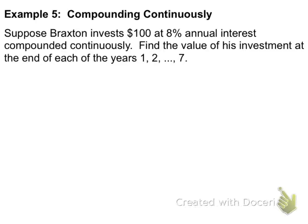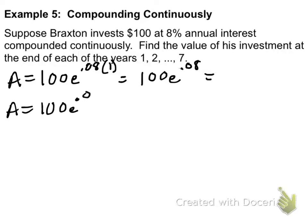So, suppose Braxton, Braxton Miller, Ohio State University. Let's use him. Apparently, Braxton only has $100, but he's going to invest it at 8% annual interest compounded continuously. Find the value of his investment at the end of each of the years, 1, 2, and all the way to 7. So, there's going to be 7 answers here, guys. So, A equals the principal, 100, E, to the .08 times 1, 1 year. So, you have to figure out what 100, E, to the .08 power is. I'll leave that to you. And then you're going to do A equals 100, E, to the .08 times 2. So, that'll be 100, E, to the .16 power, and so on. Now, when I check your notes, I'm going to expect to see all 7 of those answers, kids. So, make sure you figure these out.